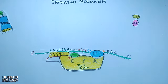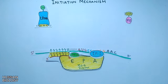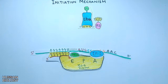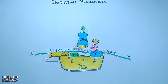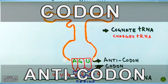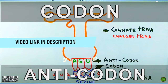Next, GTP-bound IF2 recruits the initiating aminoacyl-tRNA — fMet-tRNA — and it enters the ribosome at the P site, as shown in the diagram. The anticodon of the tRNA base-pairs with the codon of mRNA, where AUG serves as the initiating codon. The video on the codon-anticodon concept is linked in the description.